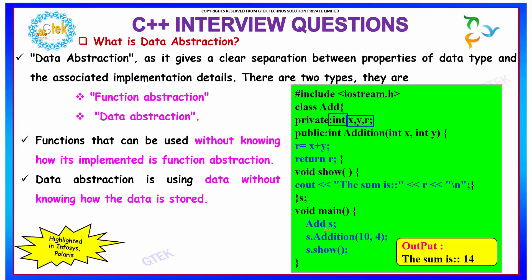In the main function, the user can simply define an object of type add and pass parameters to its function addition. That is, the user need not know how the addition is being performed.